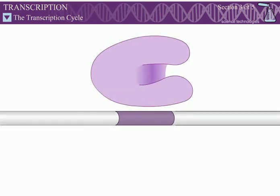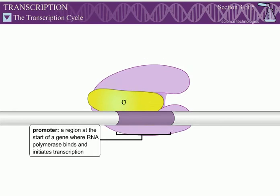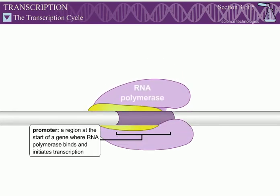Transcription initiation can be divided into three steps. In the first step, RNA polymerase binds to a region of DNA called a promoter. In bacteria, this step involves an initiation factor called sigma, which recognizes various sequences within promoters. The RNA polymerase with sigma attached binds the promoter in a defined orientation, so the same DNA strand is always transcribed from a given promoter.